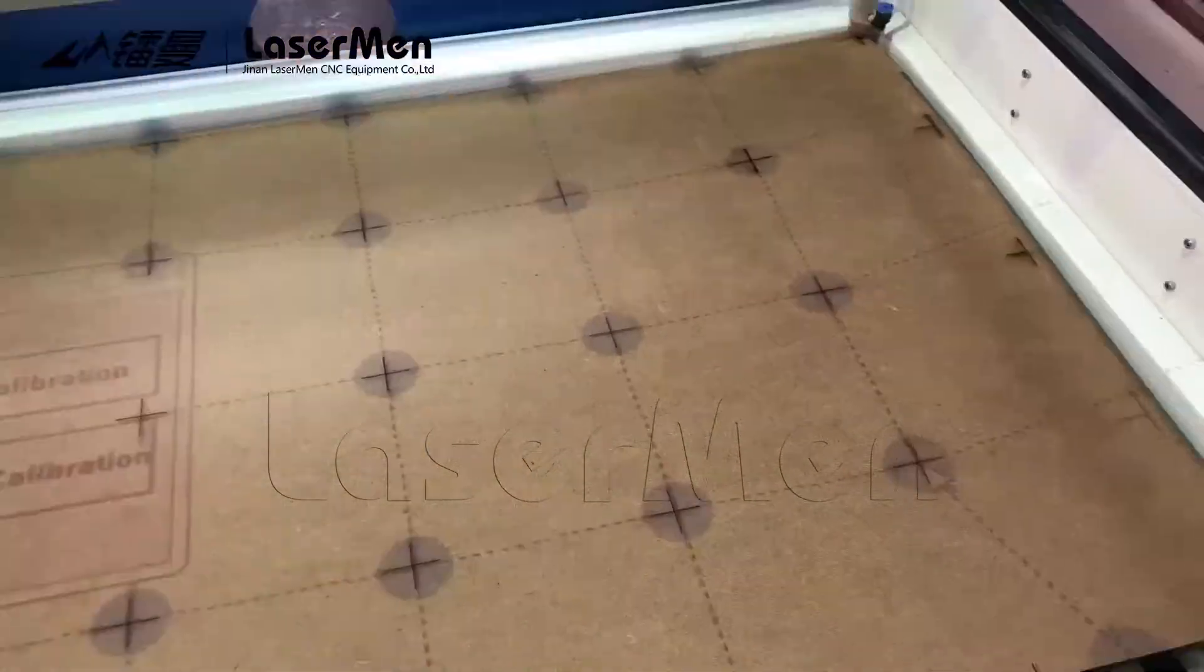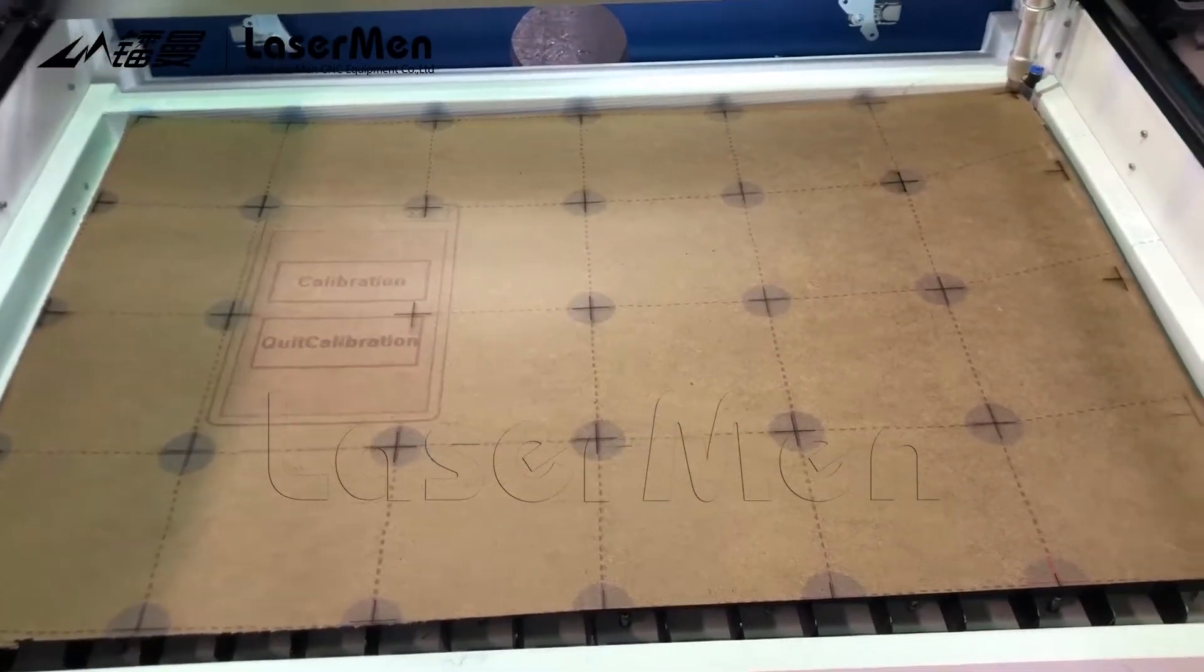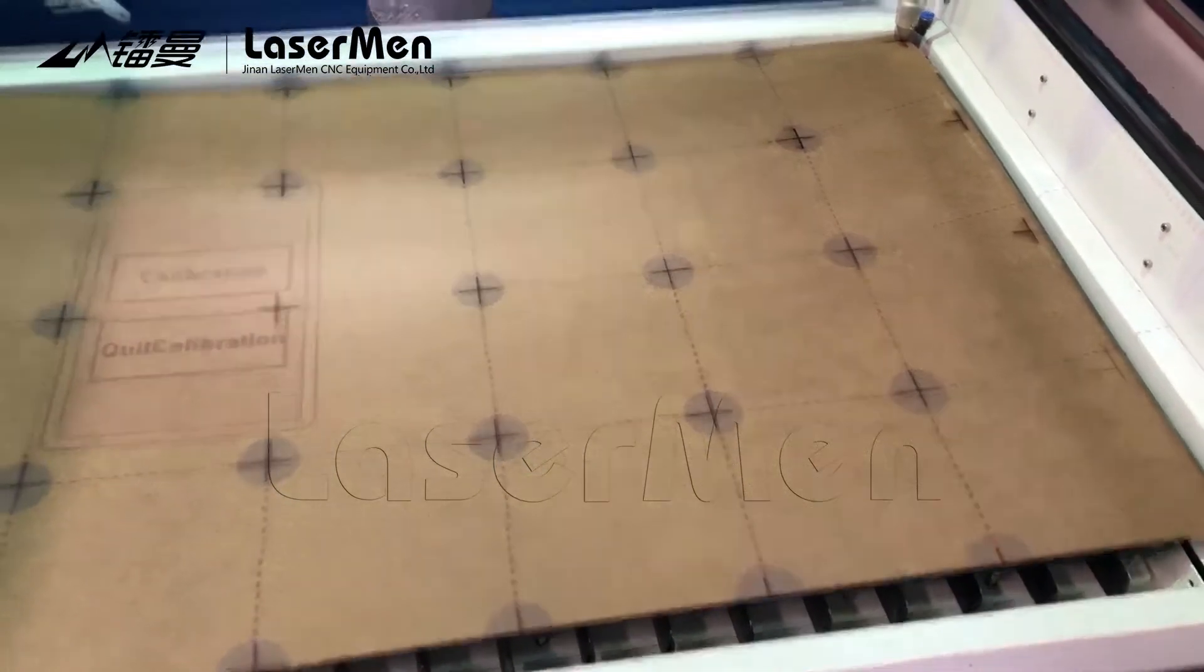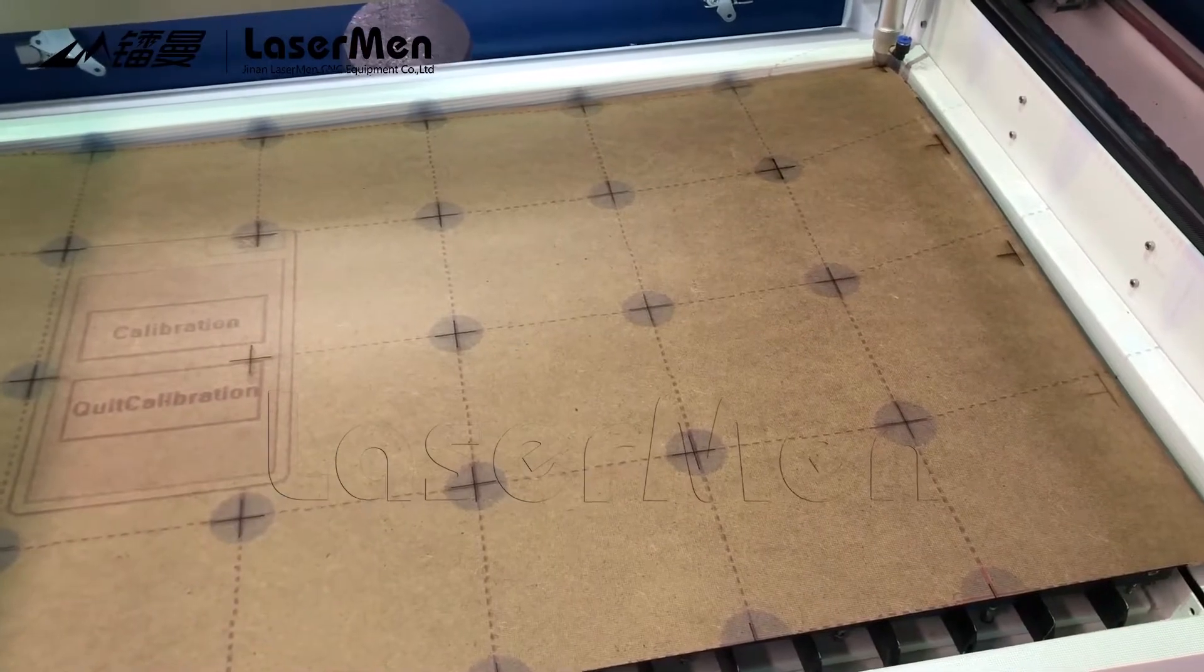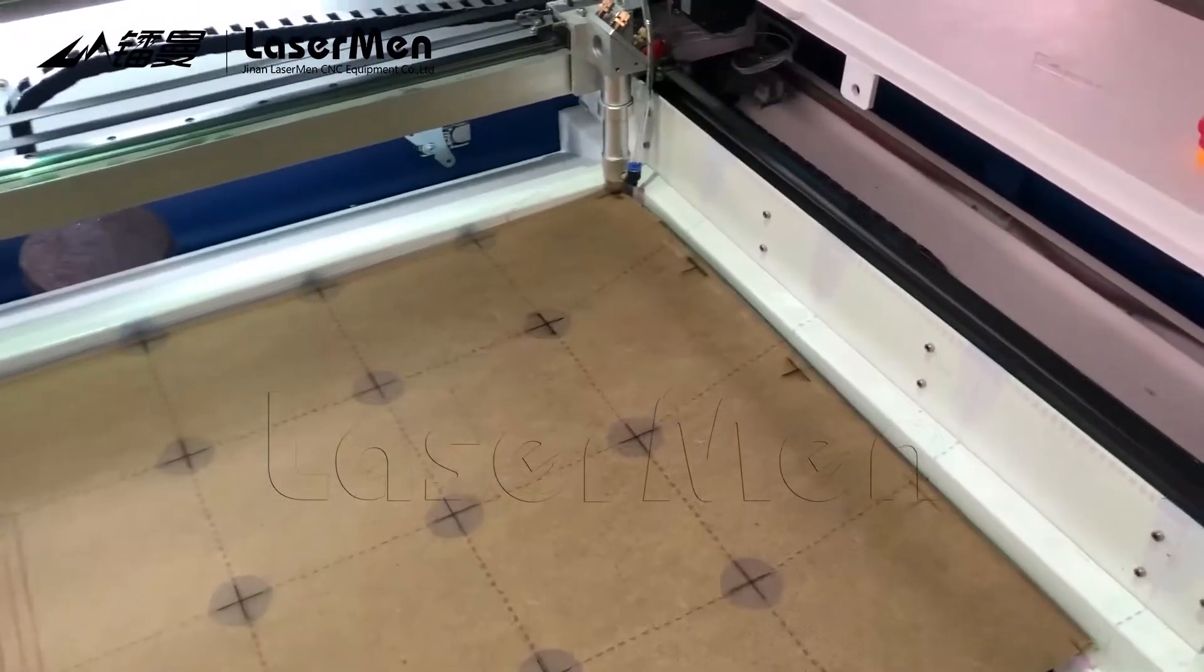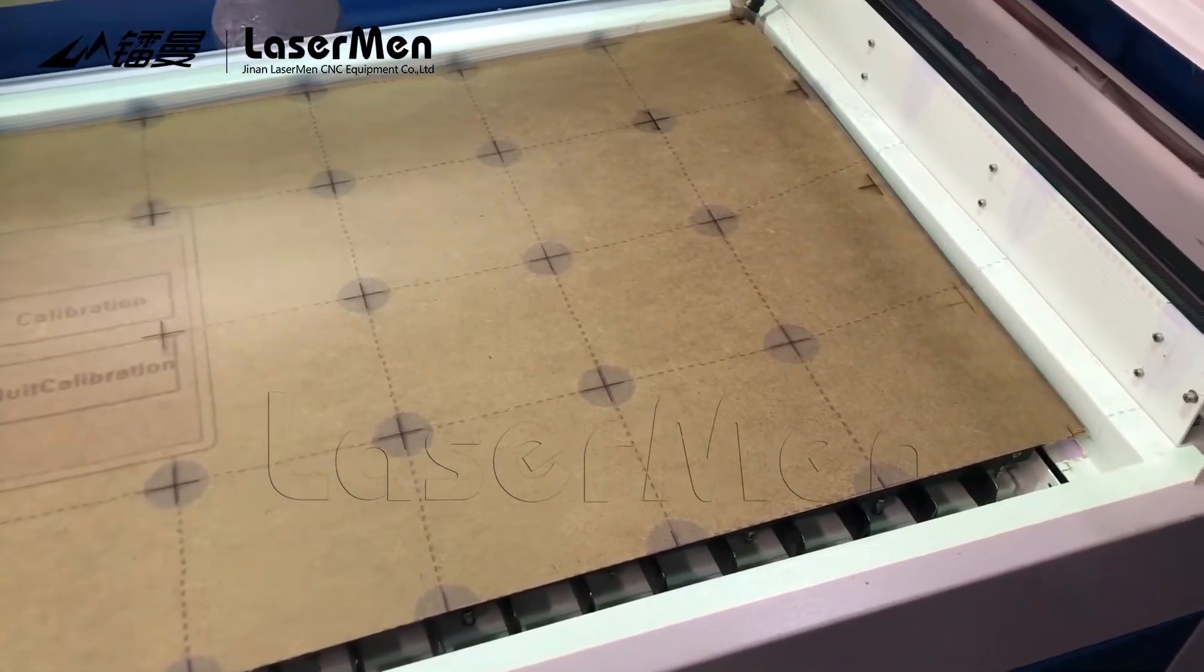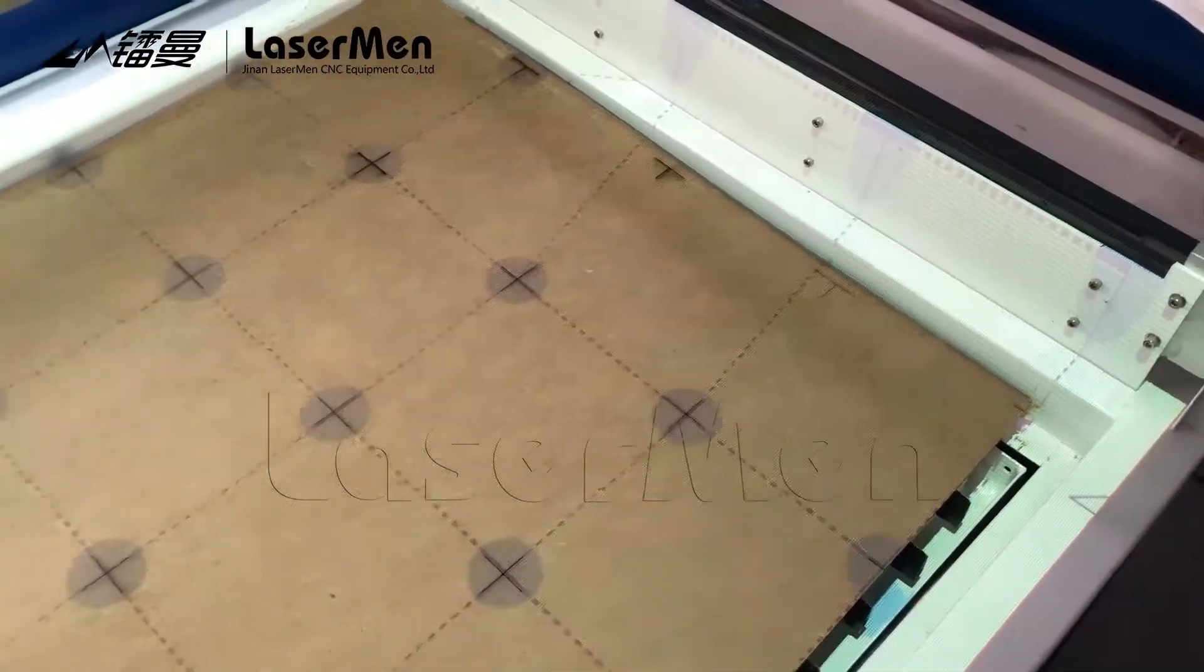So when you prepare this sheet, we use MDF sheet, this is not very flat. It is better to find a very flat sheet, because if it is not flat, the sheet height is different. So when you do the calibration, it will not be accurate. So make a flat sheet, and when you pull the dots to the cross, make it more accurate as possible. Your machine precision will be higher.